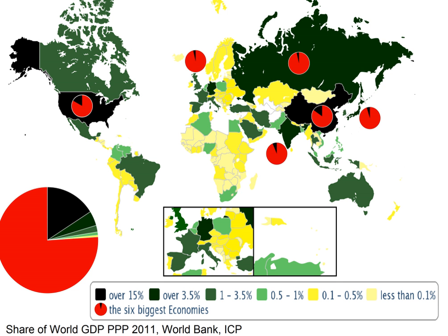GDP composition by sector: agriculture 4%, industry 32%, services 64%. Inflation rate — consumer prices: national inflation rates vary widely, from declining prices in Japan to hyperinflation in several third world countries. World inflation: 2.6% in 2017, 2.8% predicted. Developed economies: 1% to 4% typically. Developing countries: 5% to 60% typically. Least developed countries: 11.4% in 2017, 8.3%.